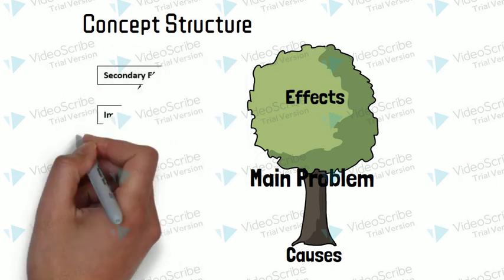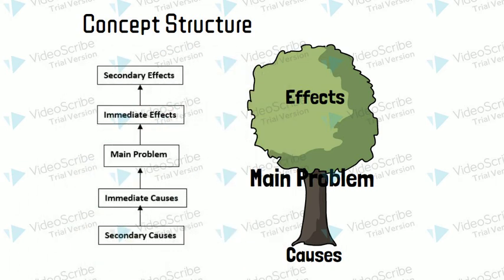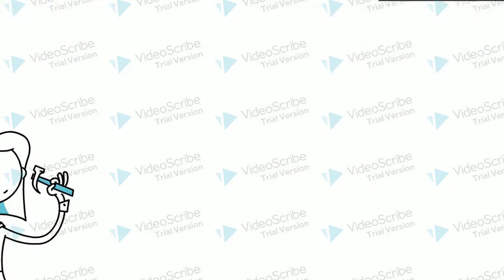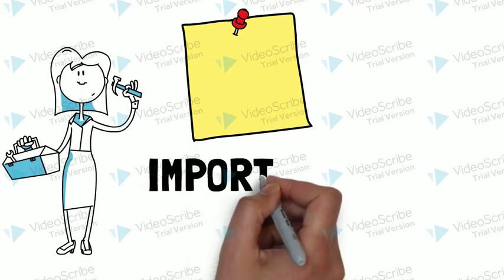The main problem has its immediate effects and immediate causes. The immediate causes answer the question, what caused the main problem? Here are the important steps so you can come up with your own problem tree.